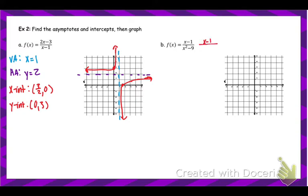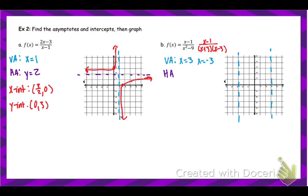Always factor first — when we get to removable discontinuities you'll see why. Once factored, find the vertical asymptotes: set the bottom equal to zero. There are two values: x equals 3 and x equals negative 3, so both are vertical asymptotes. For the horizontal asymptote: degree 1 on top and degree 2 on the bottom — bottom heavy — so y equals 0. For the x-intercept: set the top equal to zero, giving x equals 1, so the point is (1, 0).